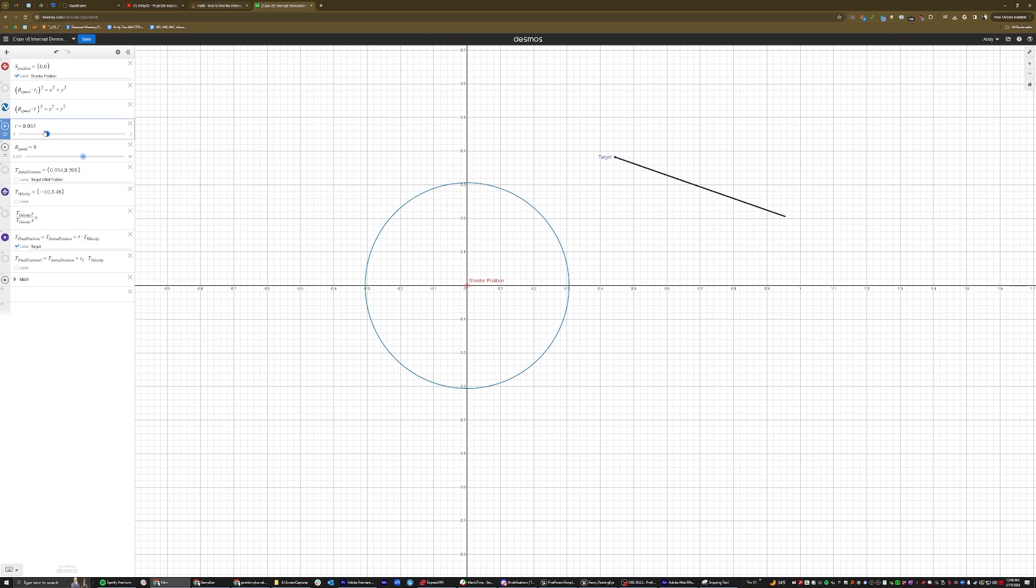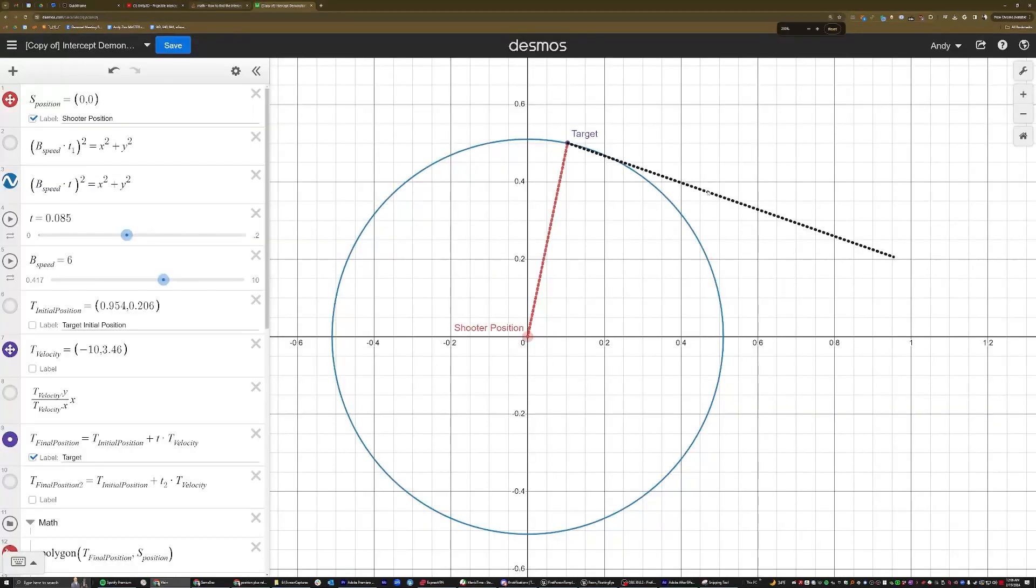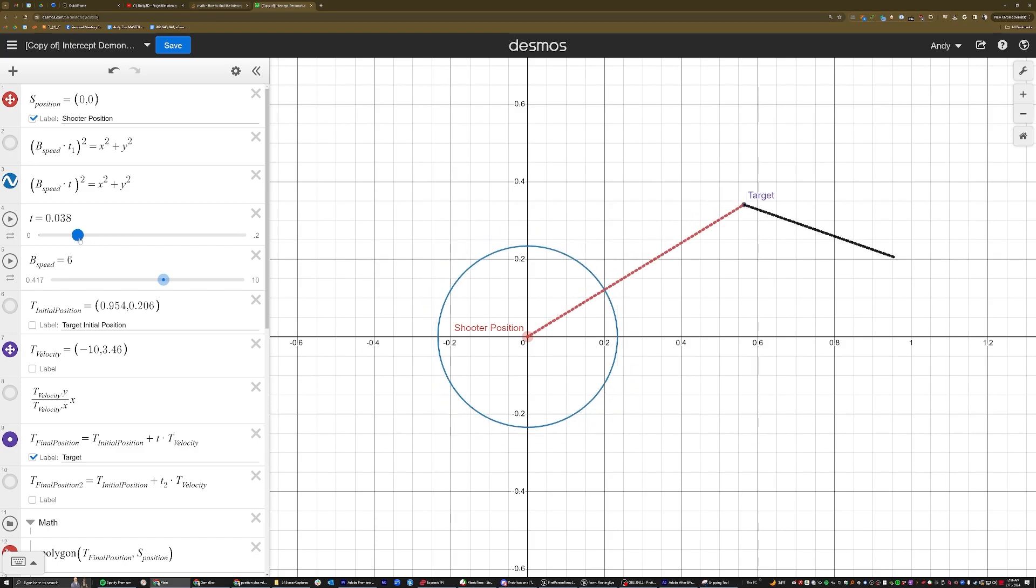So we know that the bullet travels a certain distance in a circular path of possibility around the shooter. But what else do we need to equate this to to give us something useful? So it sounds redundant, but we know that the distance between the bullet's final position and its starting position is equal to the distance it traveled. But since from the first equation, we can equate the final position of the bullet with the final position of the target. Now we have something else to use.